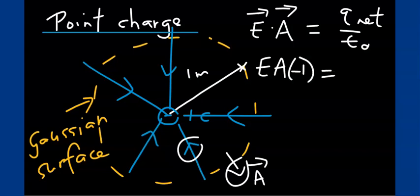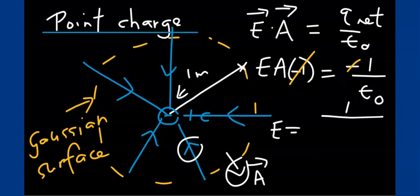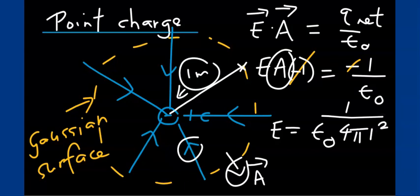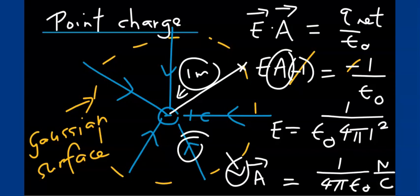The net charge enclosed by this Gaussian surface is minus 1 coulomb over epsilon naught. The minus signs cancel, and you can solve for the electric field. The electric field is 1 over epsilon naught, and the surface area of this spherical surface is 4π times the radius squared (1² = 1). So the electric field is 1 over 4π epsilon naught newtons per coulomb, directed inward towards that point charge.